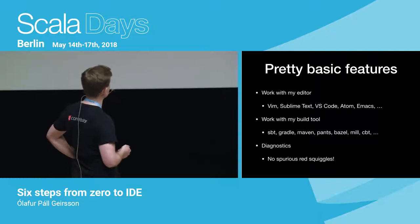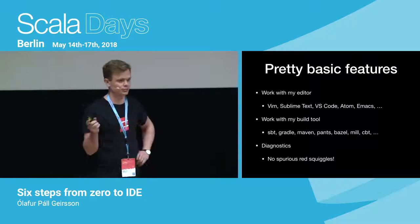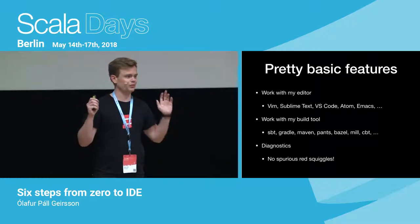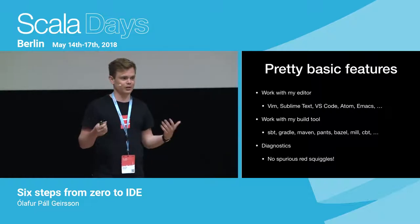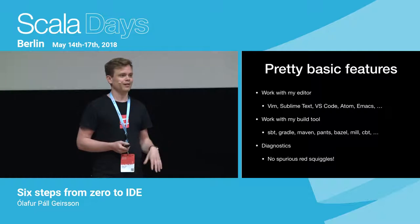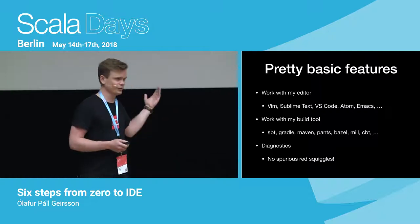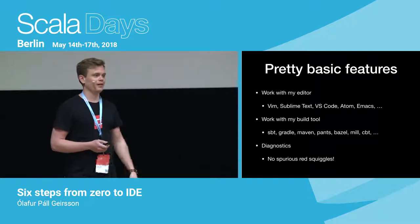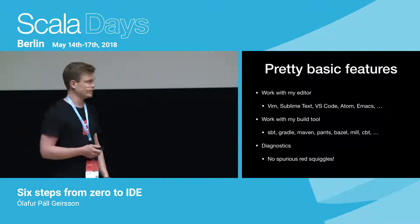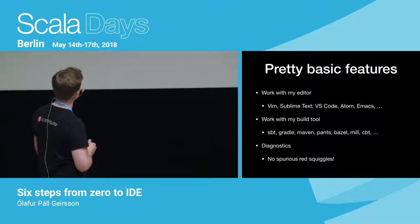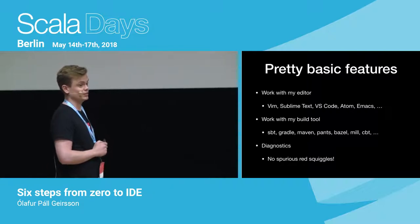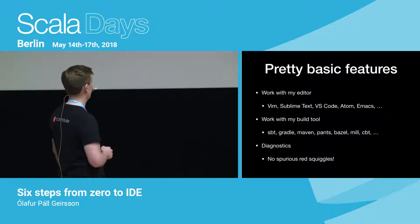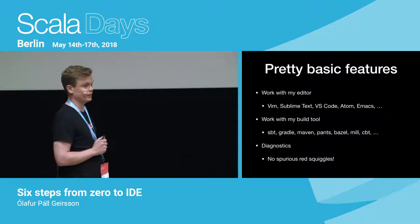And then we want diagnostics. We don't want any red squiggles when the program is totally fine — I think everyone has gotten sick and tired of that. And when there are errors, we actually want them to be in the editor too. I mean, it's not a tall order, is it? And to be honest, you can implement an IDE today, like in one day, that does just this, by writing a regex that scrapes the console logs and puts the diagnostics into the editor.